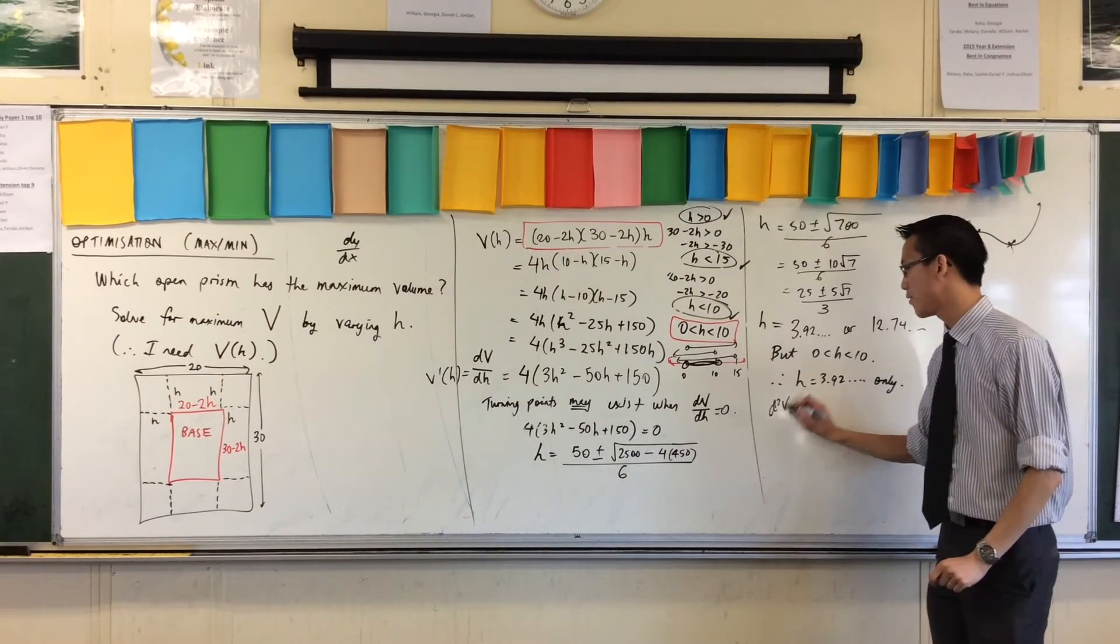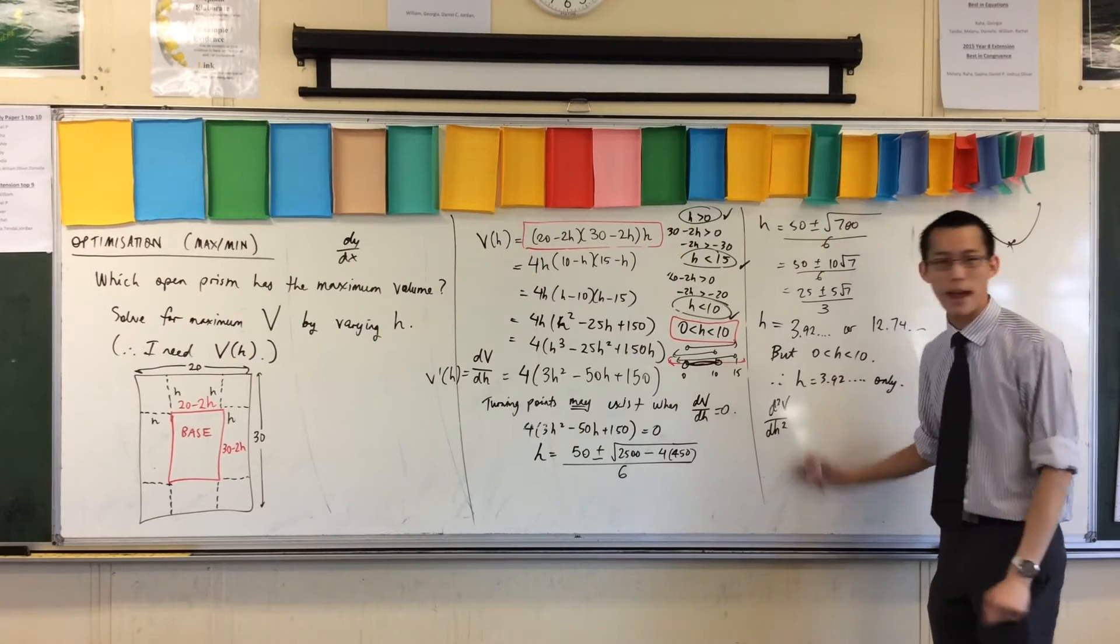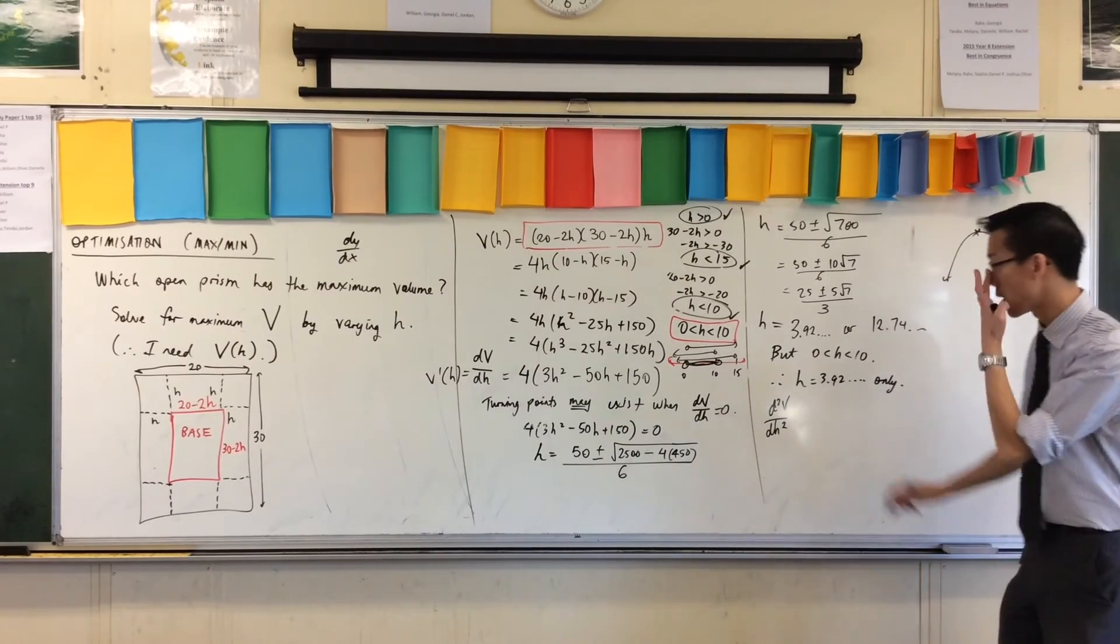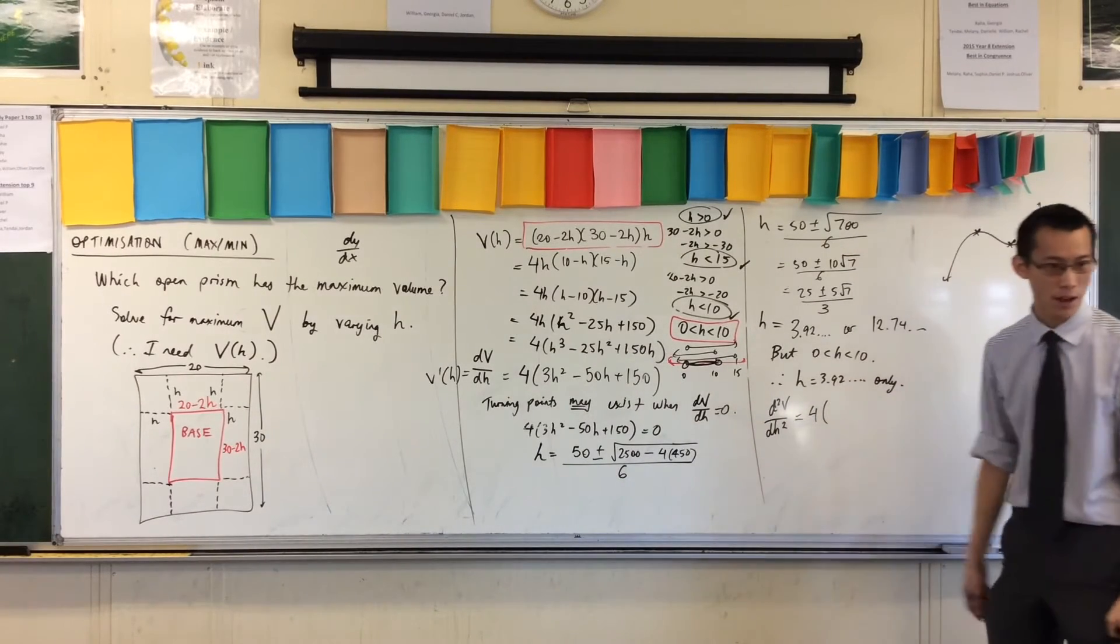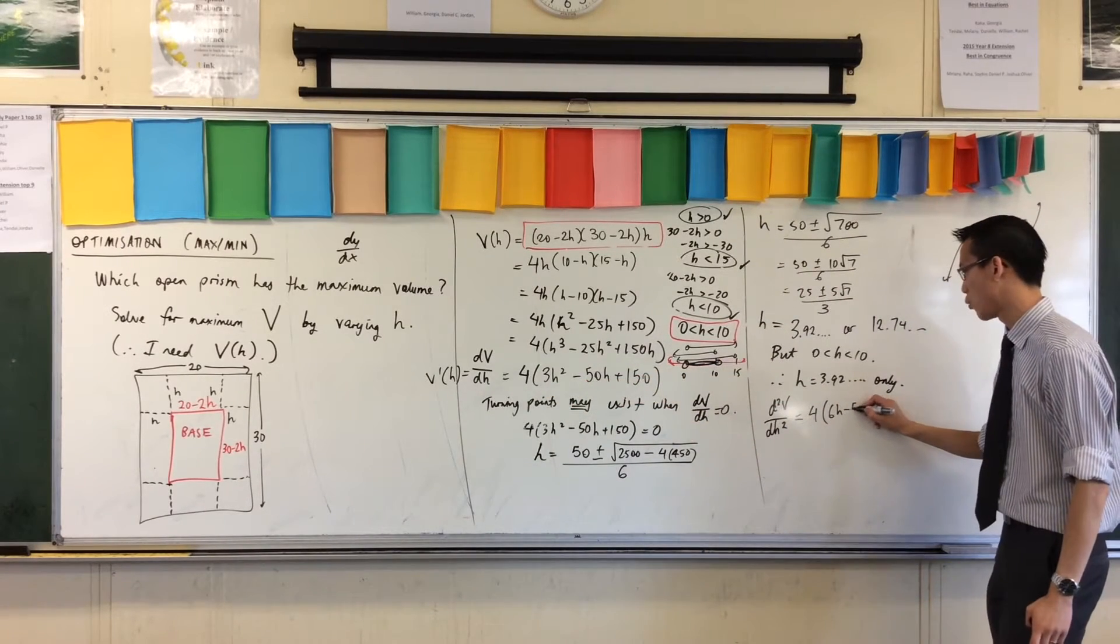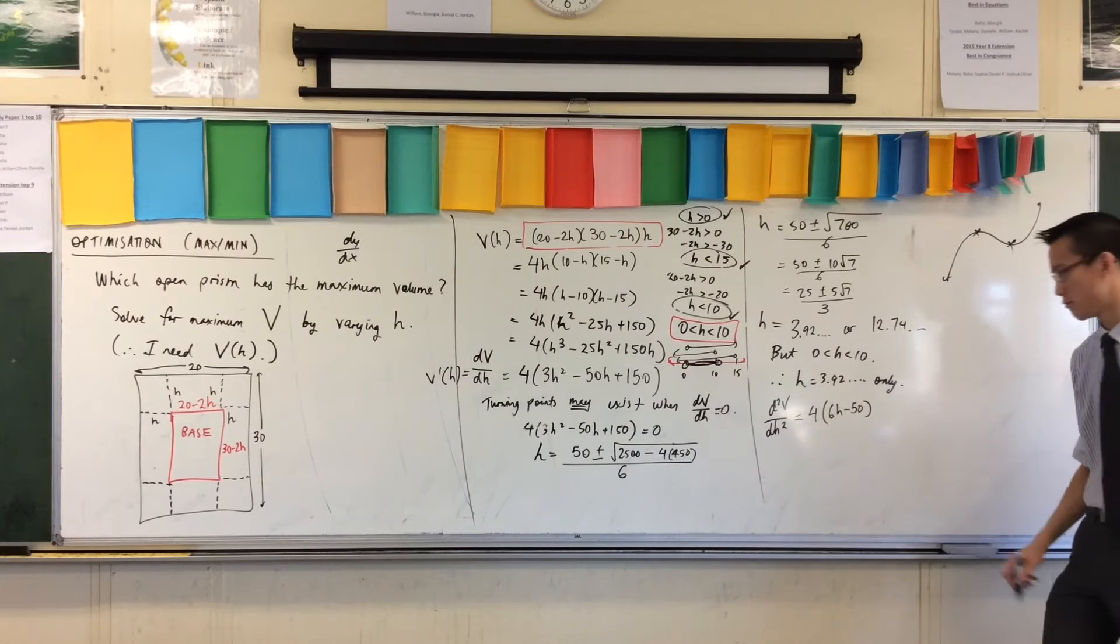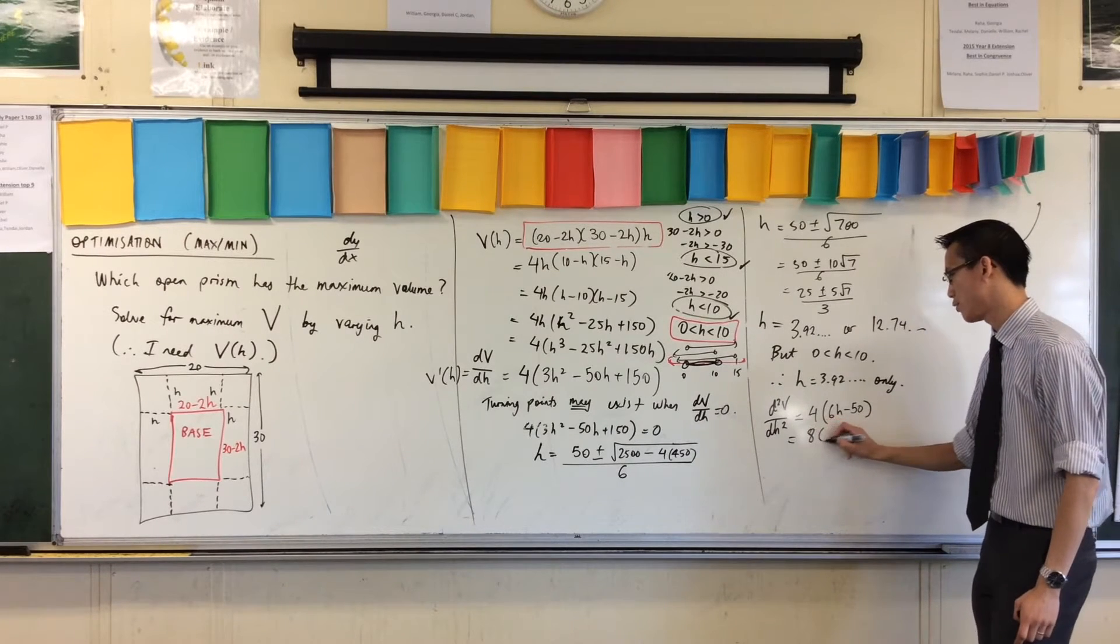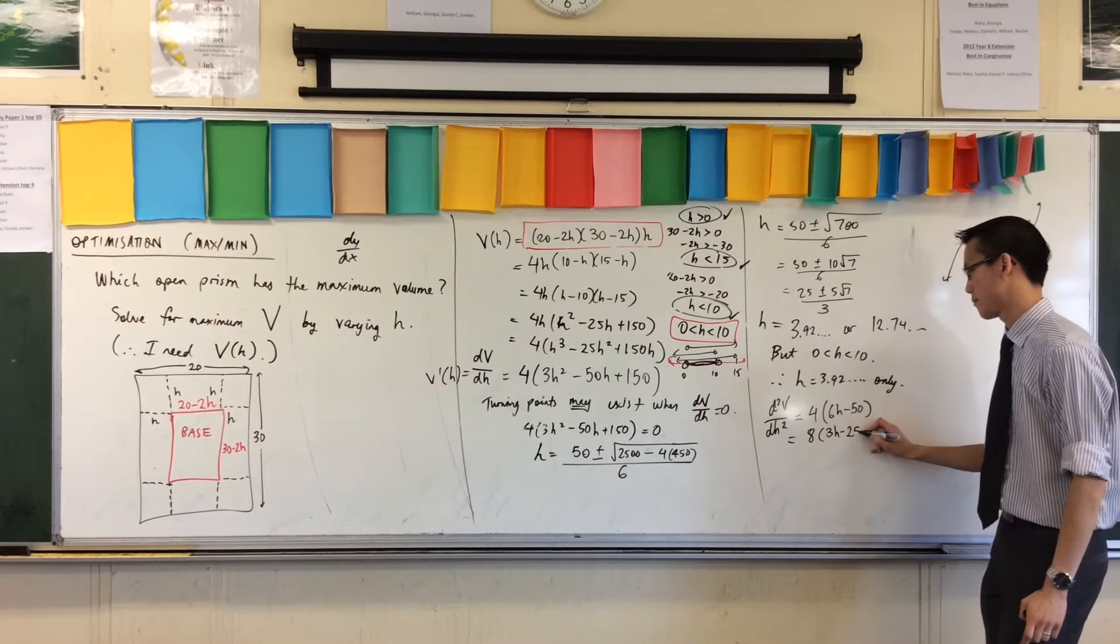Now, you look at this. It's a polynomial. Are polynomials hard to differentiate? They're not. There's not even a product. It'll be okay. Let's do the second derivative. D squared V on D H squared. That's my second derivative. I've still got that four hanging out the front, but now, I just have to process this: 6H take away 50. I don't have to, but I'll take out another factor of two.